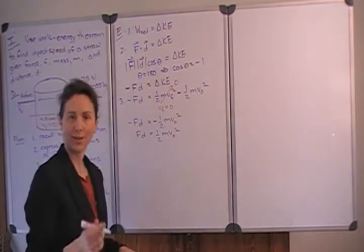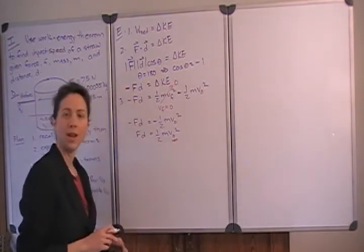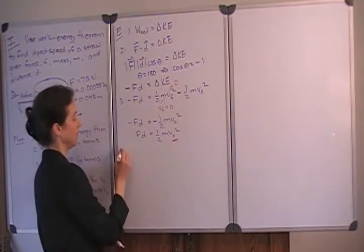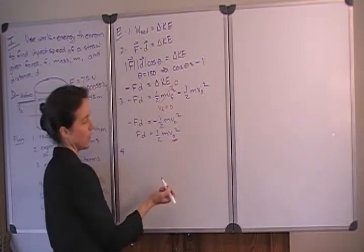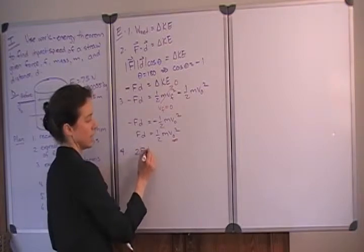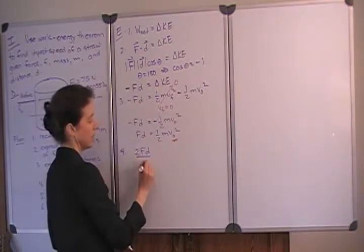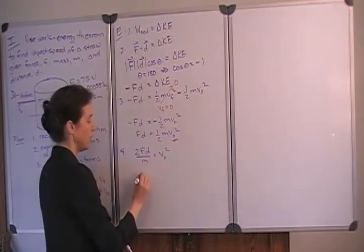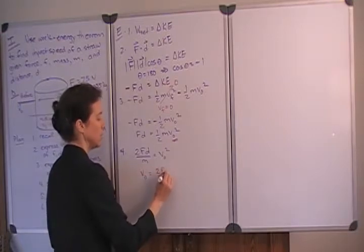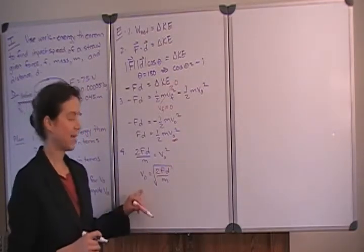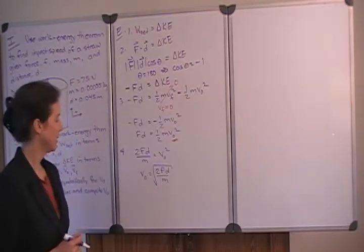The initial velocity is what we're trying to compute. Solving for it: multiply both sides by two, divide through by the mass, leaving the square of the initial velocity on the right-hand side. Therefore, the initial velocity equals the square root of two times the force times the distance divided by mass. Now we're ready to substitute values and get an actual number for the initial impact velocity.